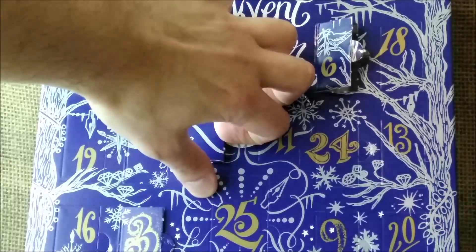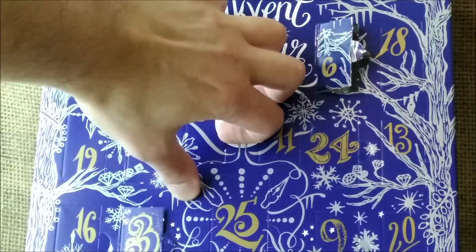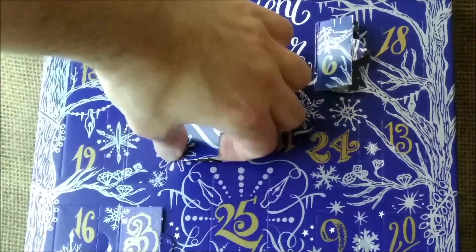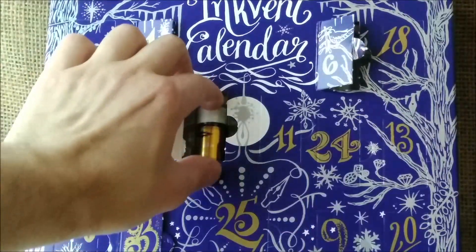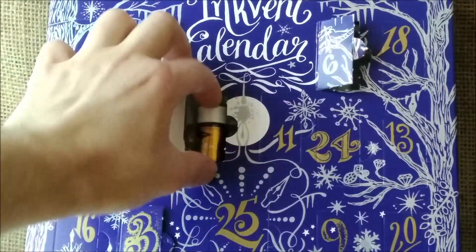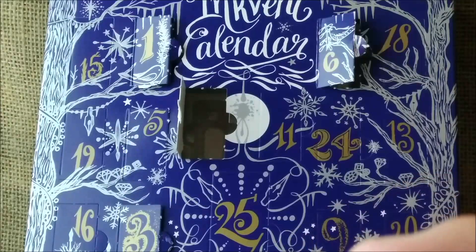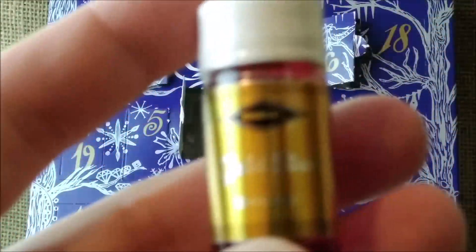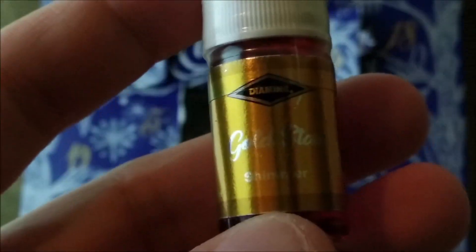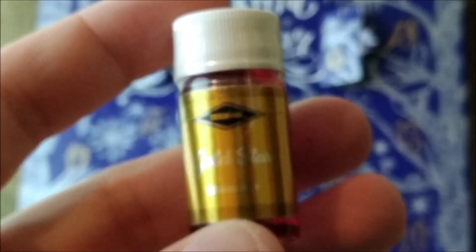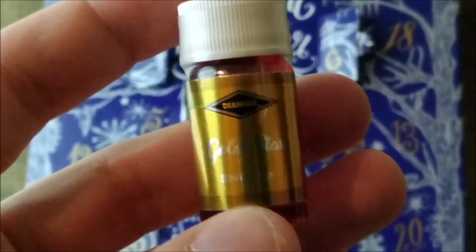Some of those are quite hard to get open. Okay, now I have it and it looks like to be golden or yellow or something like that. I don't know if you can see it, it's quite hard to see with the light.